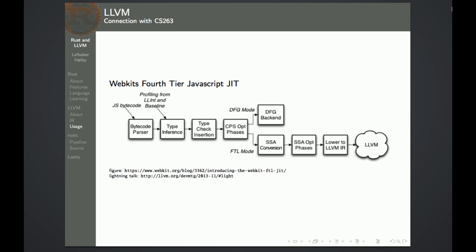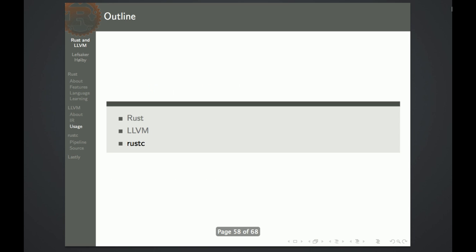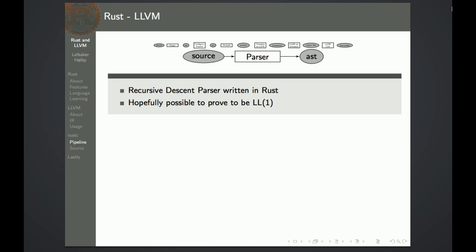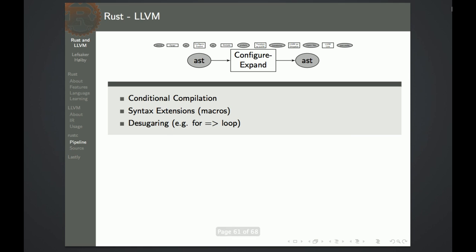In connection with this class, WebKit now uses LLVM as a JIT engine for optimizing JavaScript. The Rust compiler is a front-end for LLVM. The pipeline goes from source code to a parser to an AST, then configure and expand to a new AST still in the Rust language, then analysis and transformations still in Rust, then translation to LLVM using the LLVM API, then optimization to get object files, and then the LLVM linker to get an executable. The parser is a simple recursive descent parser. In the configure and expand step, you desugar the syntax, run macros on the AST, and do some conditional compilation.